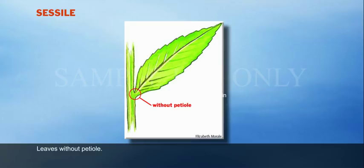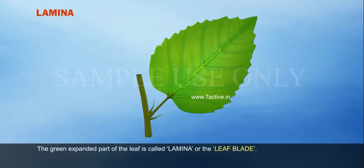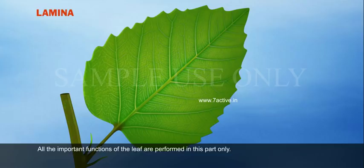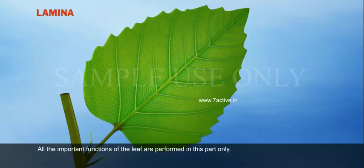Lamina: the green expanded part of the leaf is called lamina, or the leaf blade. All the important functions of the leaf are performed in this part only. The central prominent vein present in the leaf lamina is called mid-vein or midrib. The branches developed from the mid-vein are called lateral veinlets.